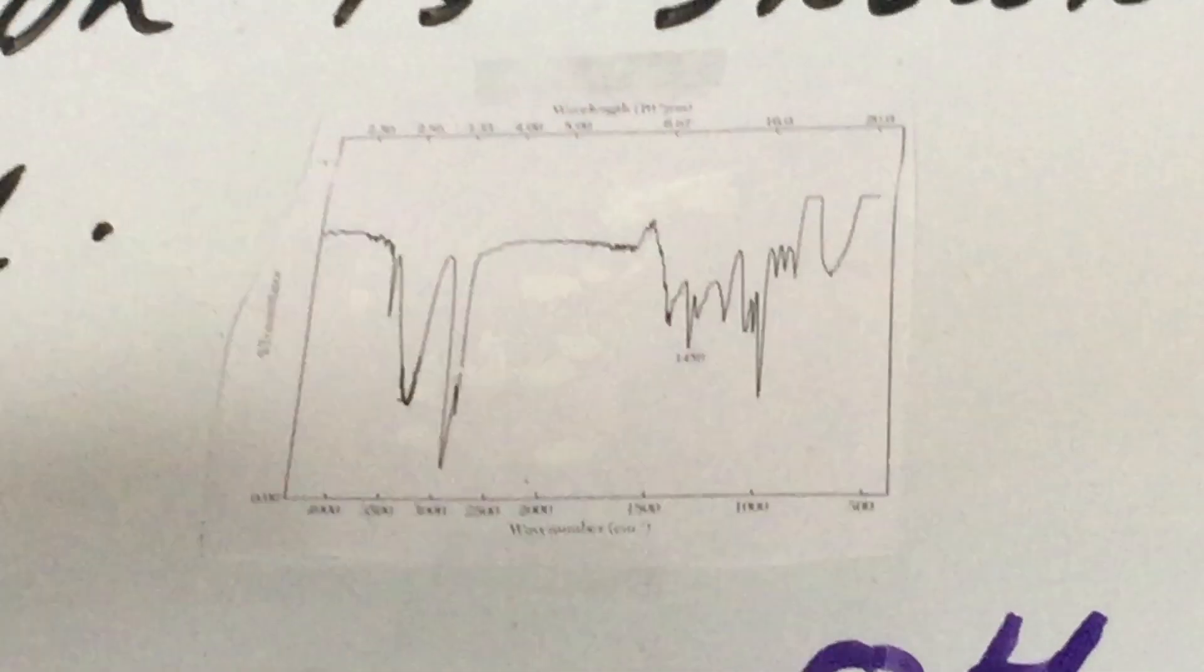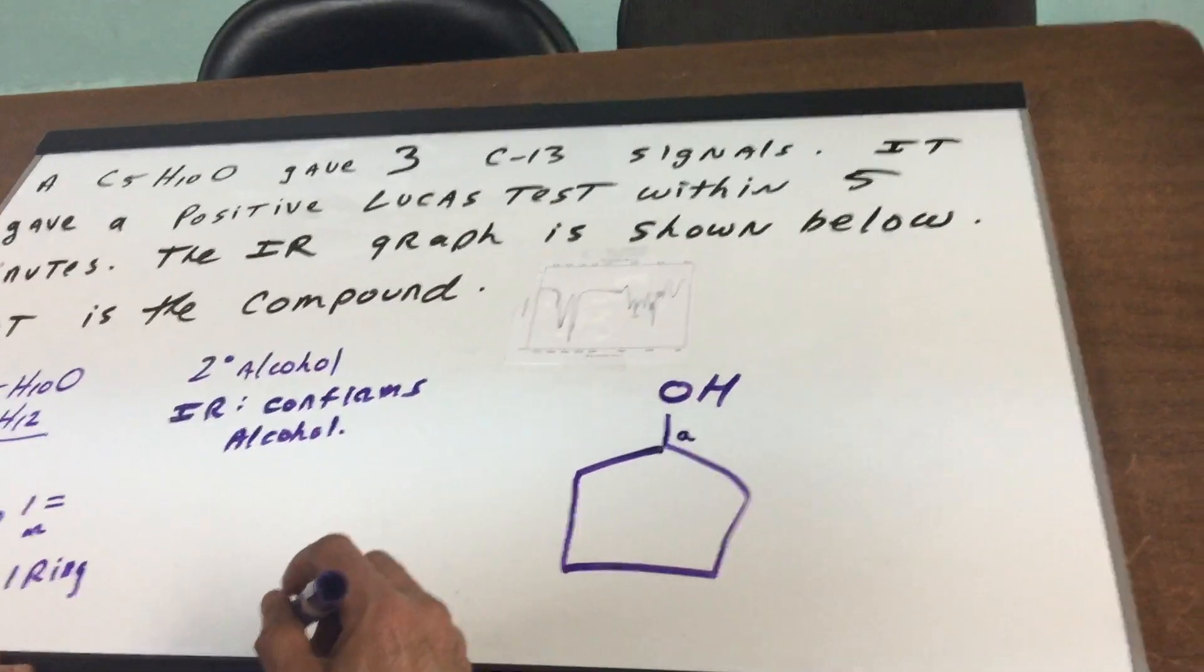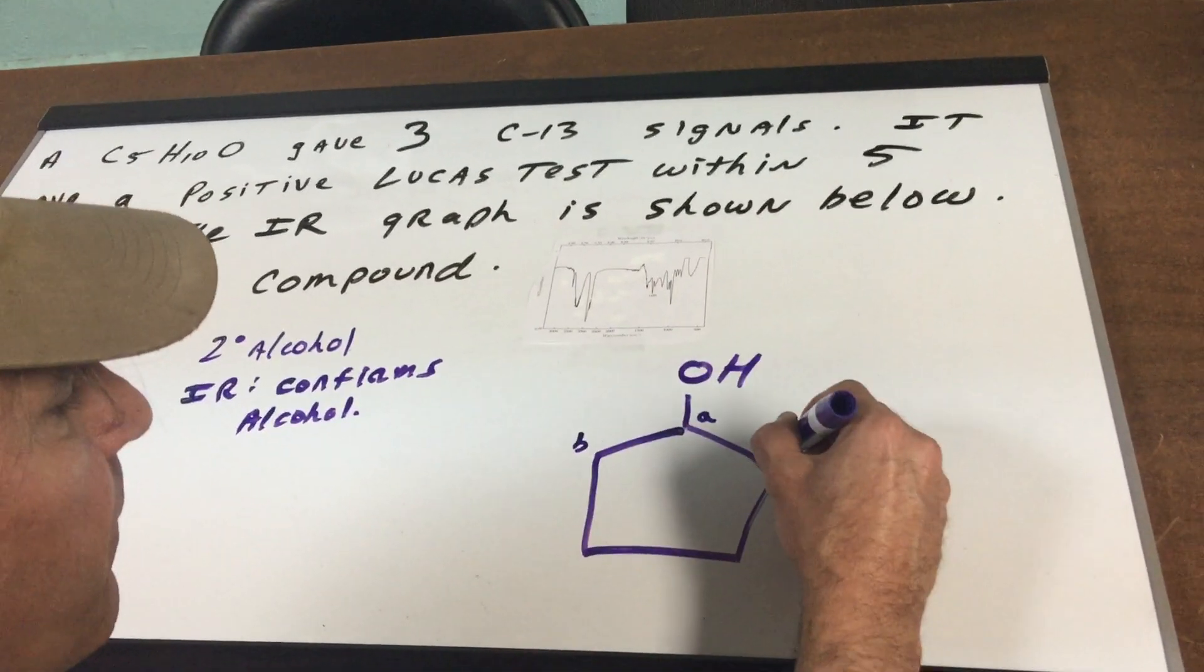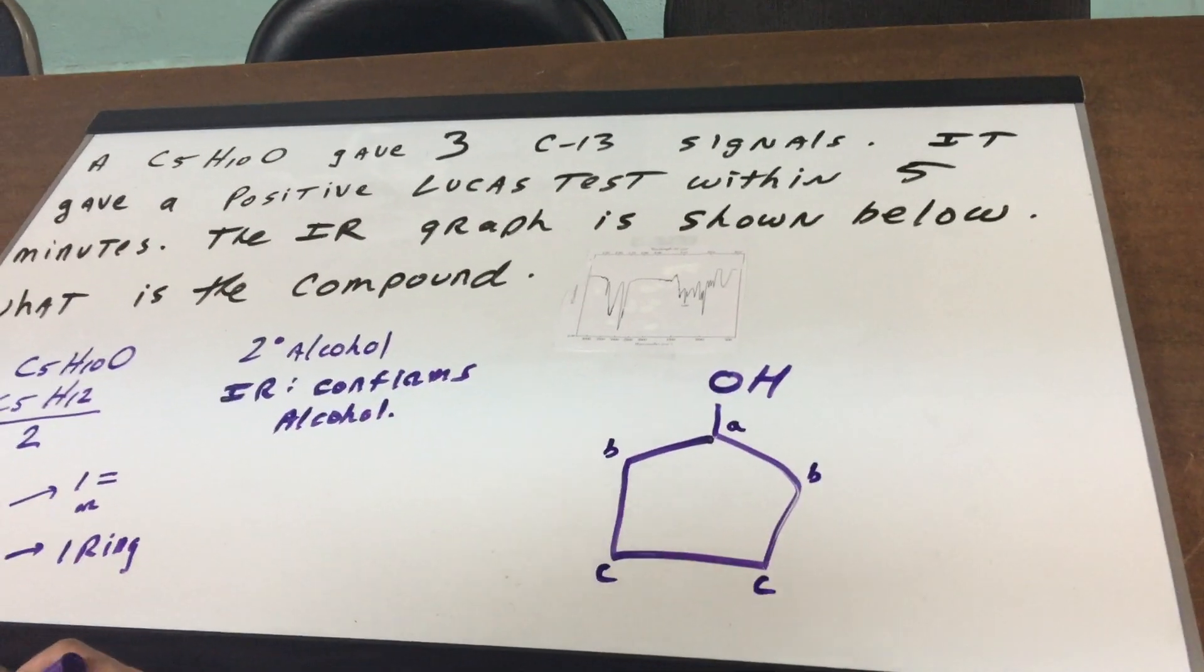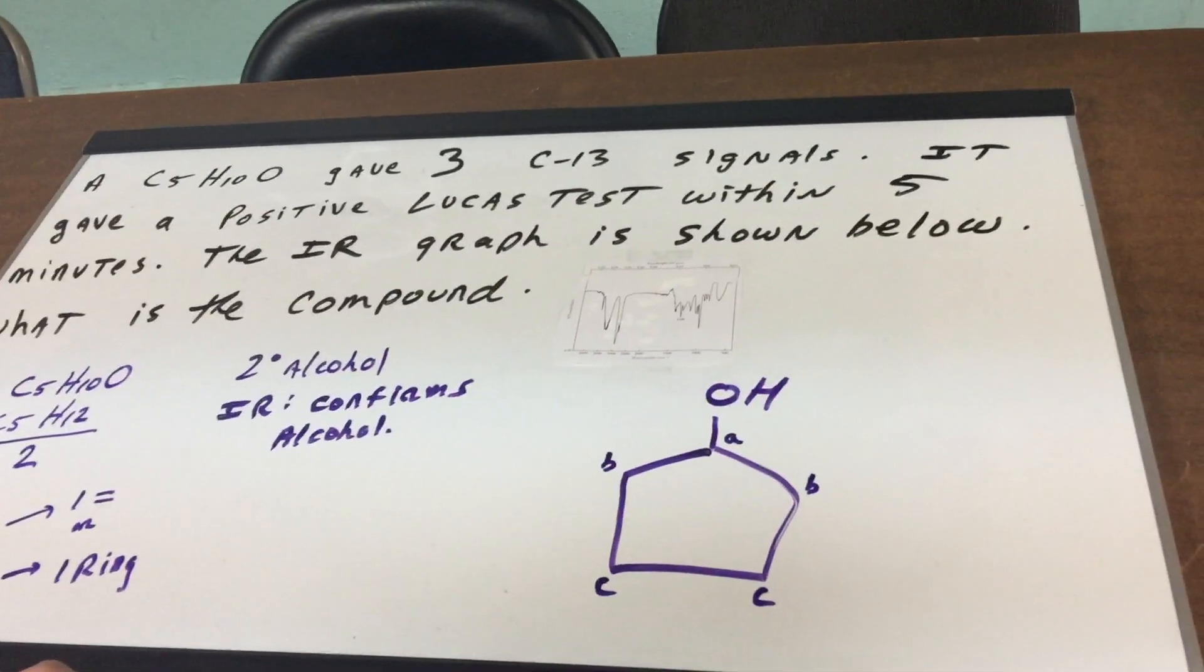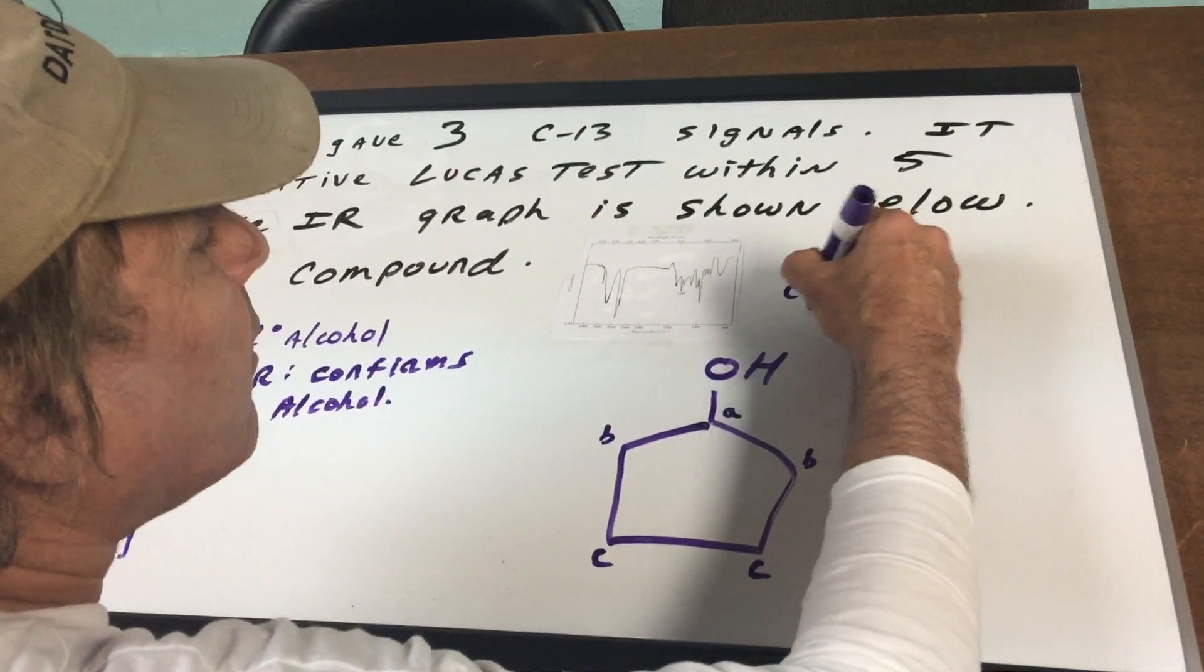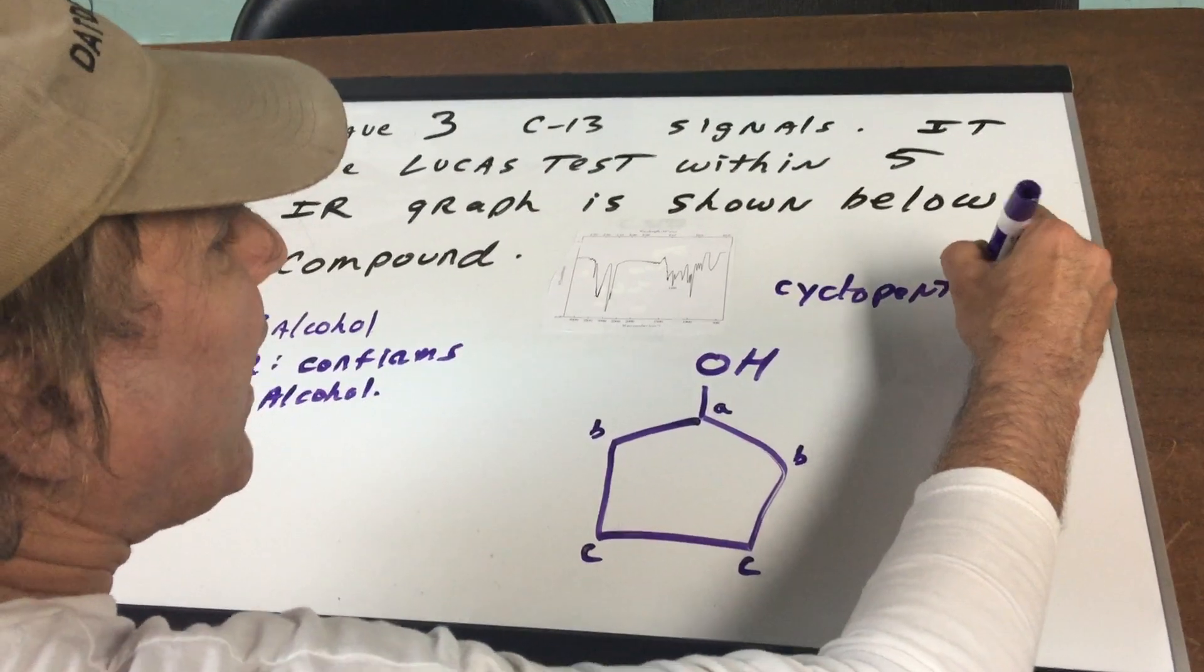If you look at the carbon-13 data, we have three spikes. So if I call this carbon A, this would be B, and this would be C. So that would indeed give me my three signals. So I'm going to propose that this structure, this unknown is cyclopentanol.